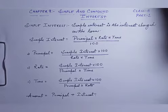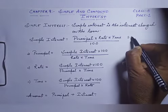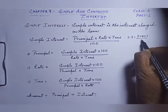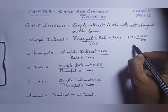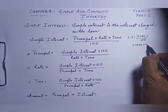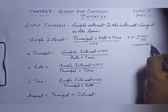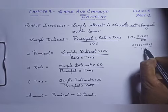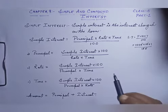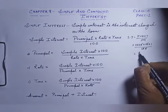So the simple interest — how to calculate it? SI is equal to Principal × Rate × Time upon 100. Here the principal is 1000, rate is 10 percent, time is one year, divided by 100. So the interest we have to give along with the principal will be rupees 100.